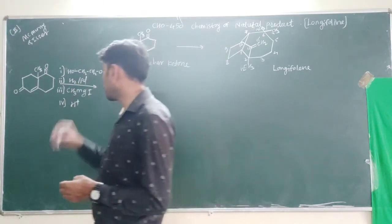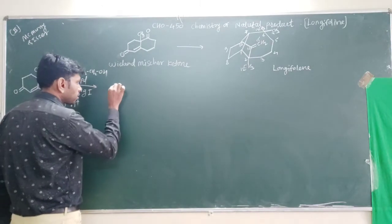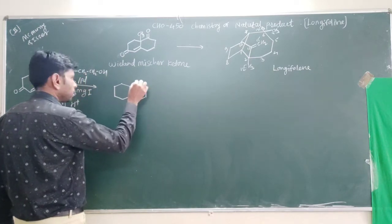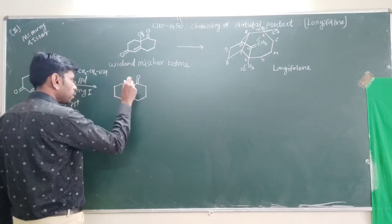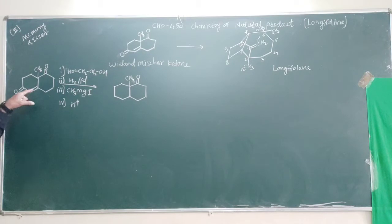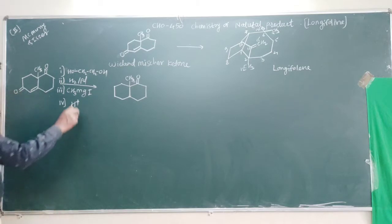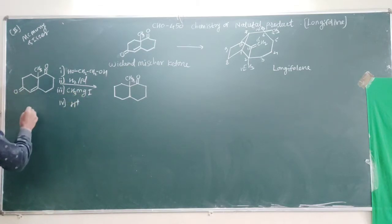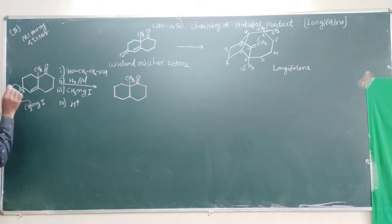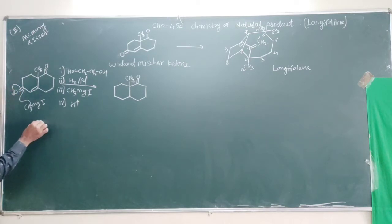The resulting product is obtained. The protection is again deprotected; the CH3 group remains as it is. This double bond is reduced, and CH3MgBr attacks on this carbonyl. The reaction takes place in this manner: this double bond is reduced, and this is our reaction center where the CH3 group attacks.